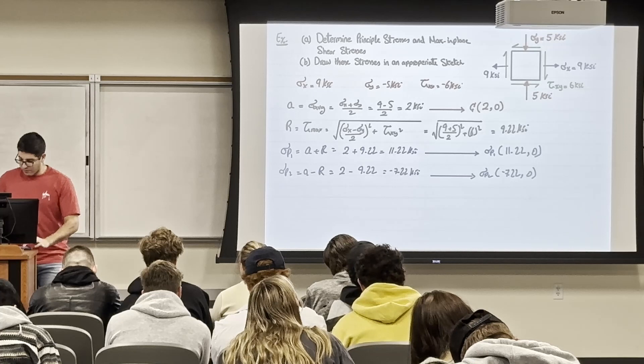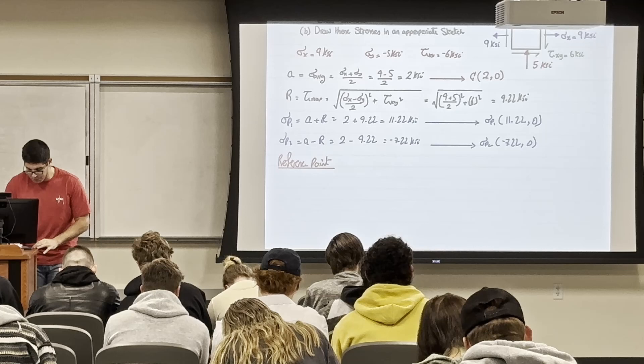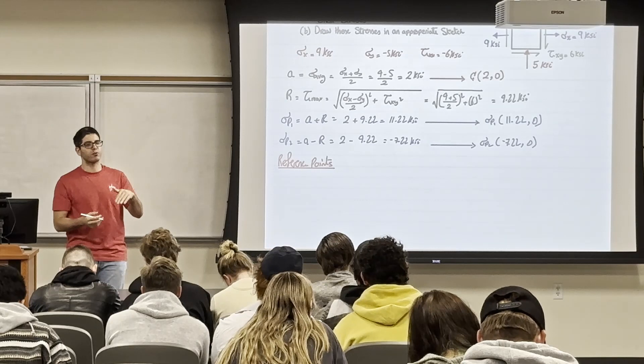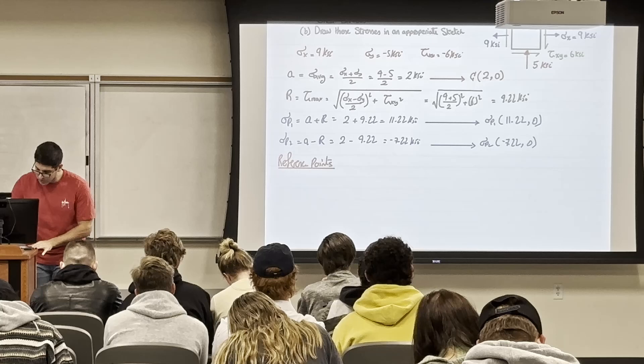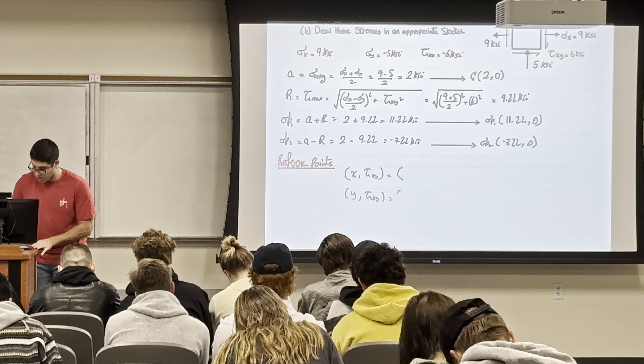Same thing with y: the stress is −5 ksi in compression. The shear on the y-plane — looking at which direction it tries to rotate the element — is counterclockwise. So Y = (−5, 6 counterclockwise). As a sanity check, I want to calculate 2θ_p = tan⁻¹(−6 / ((9+5)/2)) = tan⁻¹(−6/7).